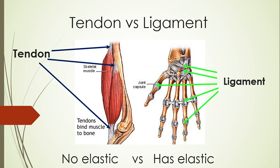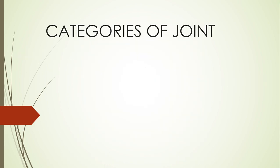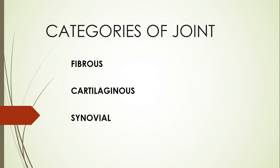Much like when we talked about bone and classified types such as long, short, irregular, and flat — we can also create classifications of joints. There are three main types of joints that exist in your body, and those are fibrous, cartilaginous, and synovial. These are the three main categories of joints that you will find in your body.